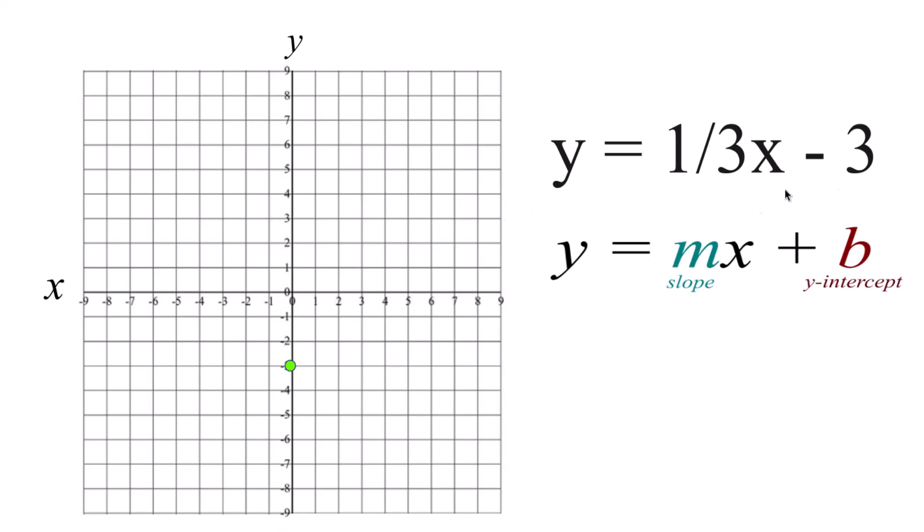Then for m, that's the slope. We think of that as rise over run. So 1 is rise, 3 is run.